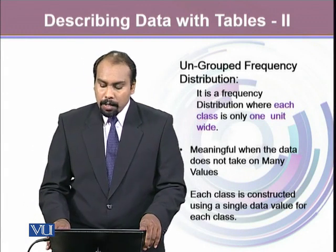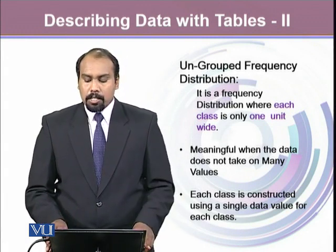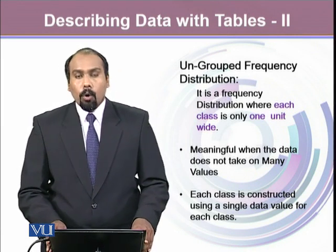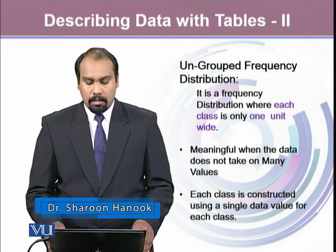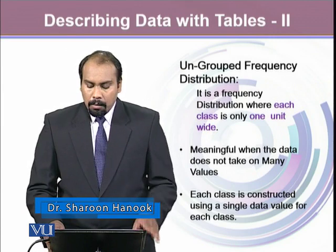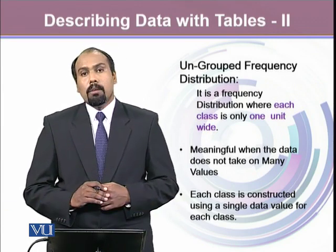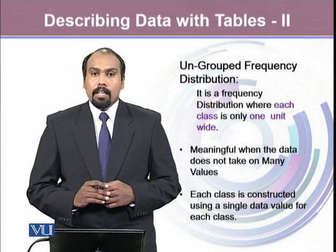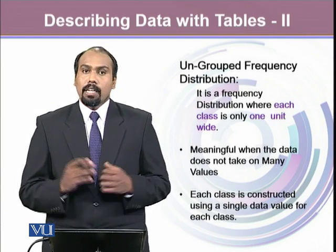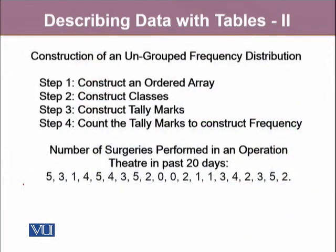Then we have ungrouped frequency distribution. It is a frequency distribution where each class is only one unit wide. It is meaningful when the data does not take on many values, and each class is constructed using a single data value. When constructing an ungrouped frequency distribution, we follow a few steps: first, construct an ordered array; second, construction of the classes; third, construction of tally marks; and finally, counting those tally marks to produce the frequency distribution.